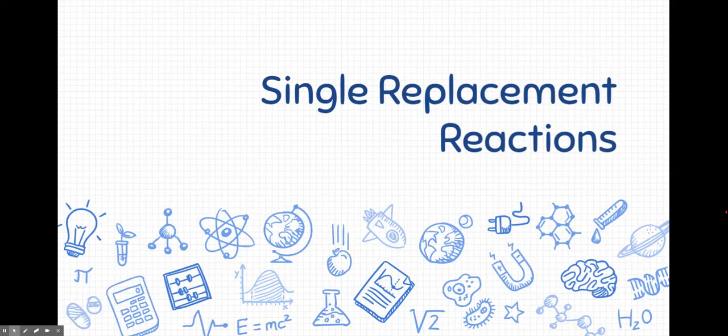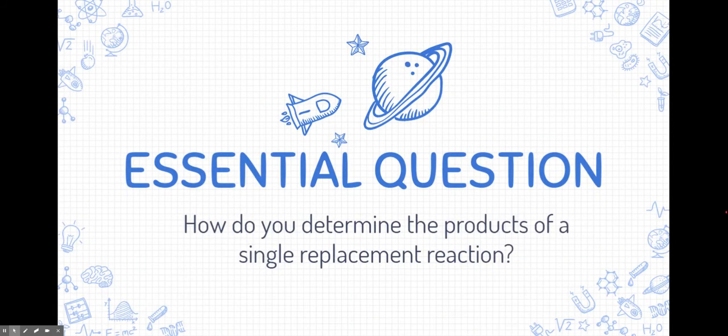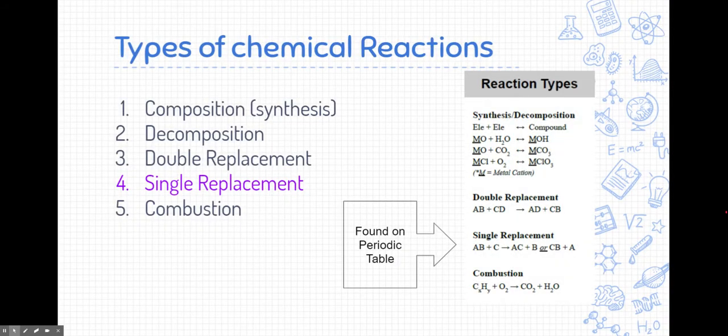Let's learn about single replacement reactions. Here's the essential question right at the top of your page: How do you determine the products of a single replacement reaction? Remember, single replacement reactions are just one of five different types of chemical reactions, and we're going to talk about them in-depth.